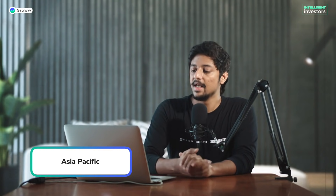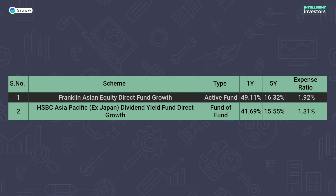For the Asian markets, there are two funds — one fund of fund and one active fund. The first is Franklin Asian Equity Direct Fund with a five-year return of 16.32% and an expense ratio of 1.92%. The second is HSBC Asia Pacific ex-Japan Dividend Yield Fund, which also provides dividends, with a five-year return of 15.55% and an expense ratio of 1.31%.